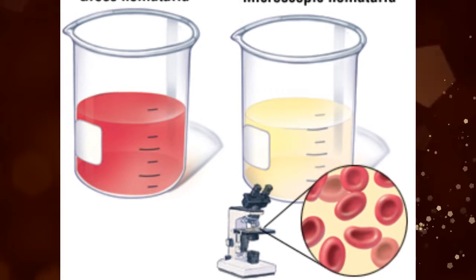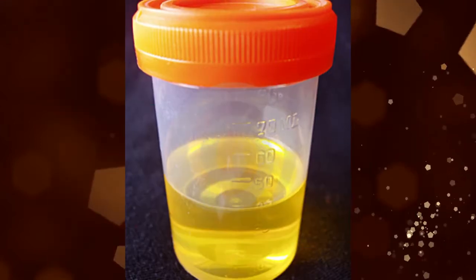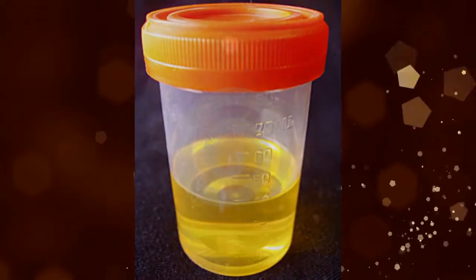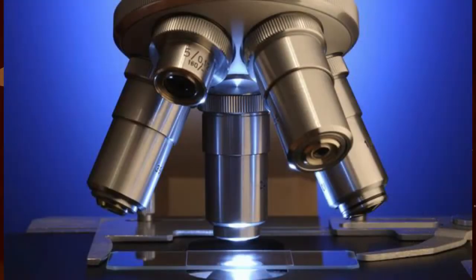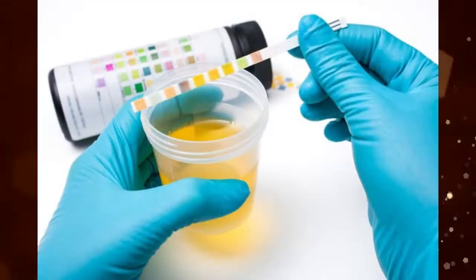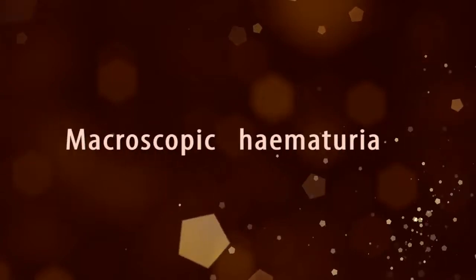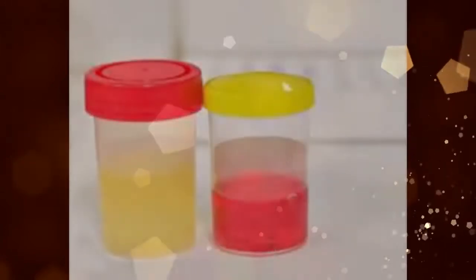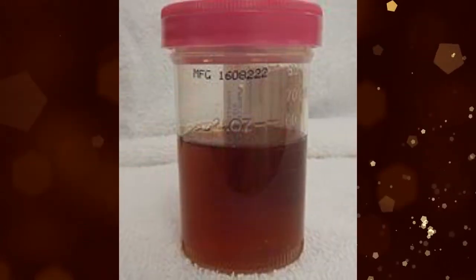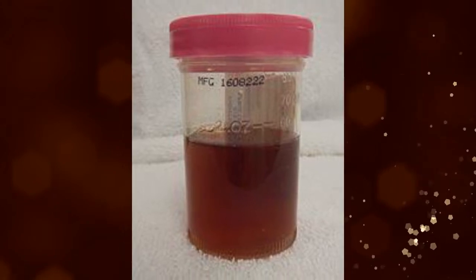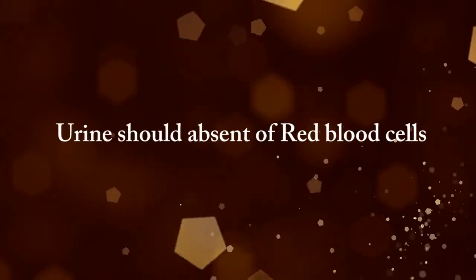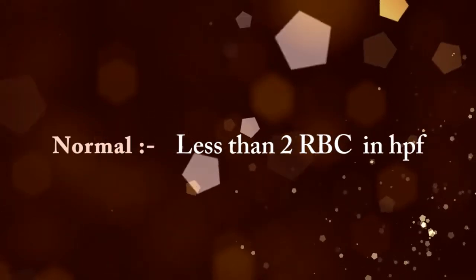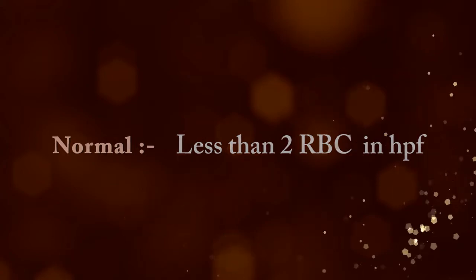Microscopic hematuria is a condition in which a low amount of red blood cells are present in the urine, which are not visible to the naked eye and can be examined under a microscope or dipstick method. In macroscopic hematuria, the number of cells are sufficient enough to change the urine color from yellow to pink or red. Theoretically, urine should be absent of red blood cells, but fewer than two red blood cells in urine is considered a normal condition.